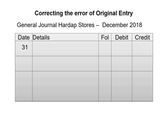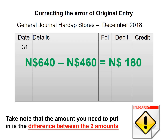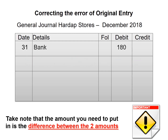First we write the date, but we need to take note of the following: the amount to put in will be the difference between the two amounts. So it will be the difference between $640 and $460, which is $180. We need to first record the debit entry, which is bank $180. Note again it's the difference between the two amounts. Then we credit purchases with the same amount of $180.